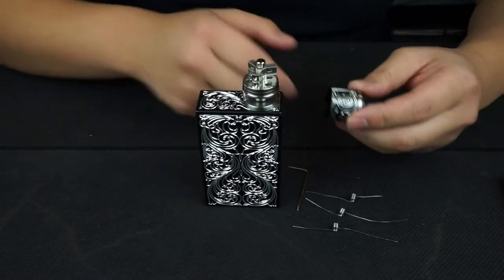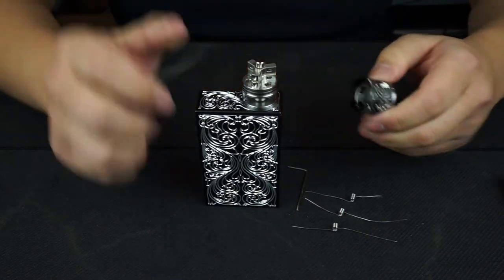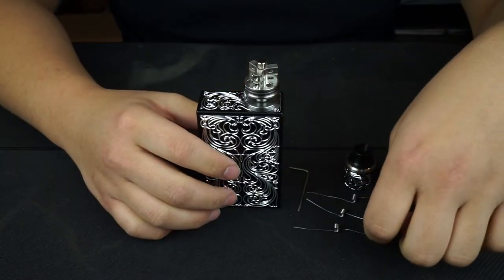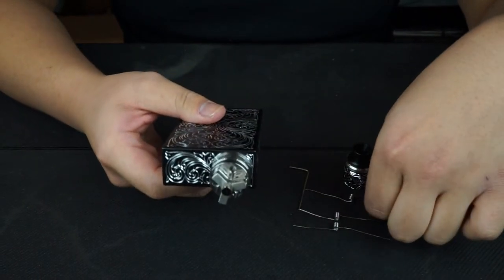We've been getting questions on how to build the Triad Genesis tank. They're getting dry hits and everything. Most of the thing that people get wrong is the wicking part.